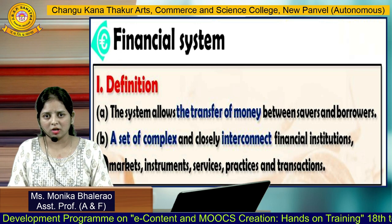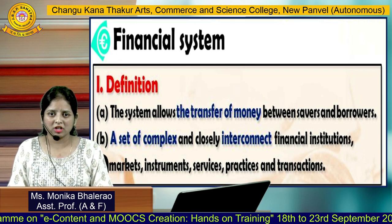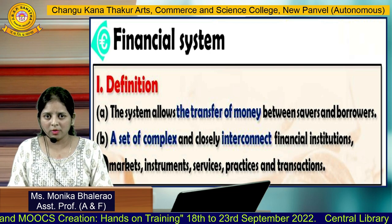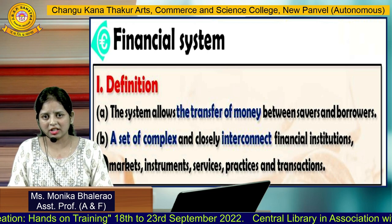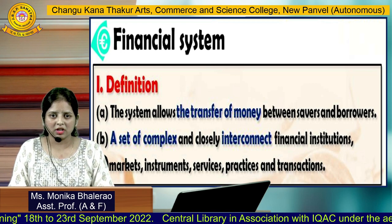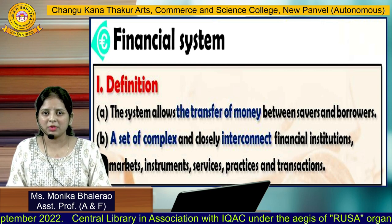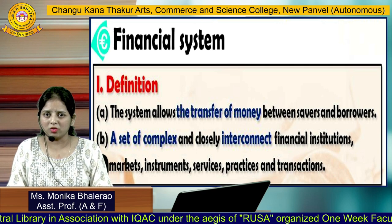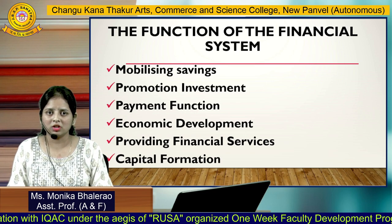What does that mean? If you are a person and you have saved some money from your income and you want to put that saving into any kind of investment and get a return from it, in this case you require a platform. The financial system is that platform — it allows you to invest your savings and provides that money to a needy person who requires it. That is why the system allows the transfer of money between the savers and the borrowers.